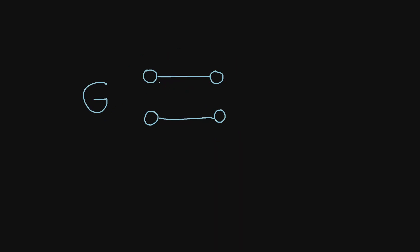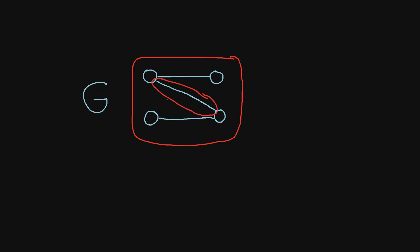Now imagine that we add an edge — so let's say we add this new edge right here. This resulting graph is not a subgraph of the original graph G, because now we have an edge that was not originally in graph G. In other words, the edges in this graph are not a subset of the original edges in graph G.